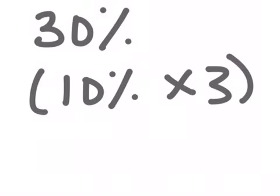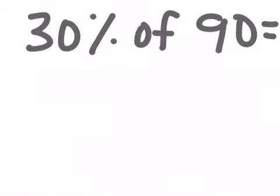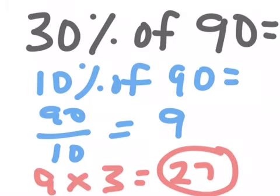If I were looking for 30%, I'd simply take my benchmark percent of 10 and multiply it by 3. In this example, what is 30% of 90? Well, I know that 10% of 90 is 90 over 10 or 90 tenths, which is the same thing as 9 wholes. And I simply have to take that 10%, which was 9, and multiply it by 3. So my answer in the red circle is 27.